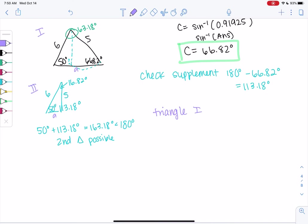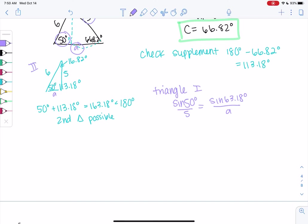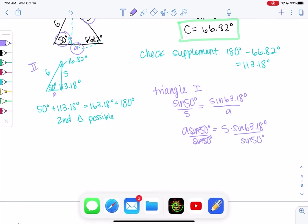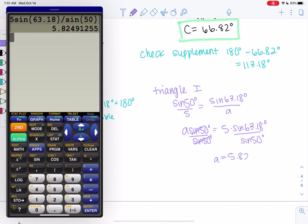So we can say sine of 66. Actually, I usually like to use the given side, easier numbers. Sine of 50 over 5 equals sine of 63.18. It's always opposite angle and opposite side over A. Cross multiply, A sine of 50 equals 5 times sine of 63.18 and divide by sine of 50. And we get 5 sine of 63.18 divided by sine of 50.